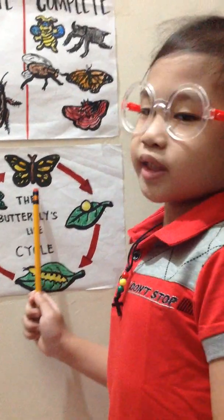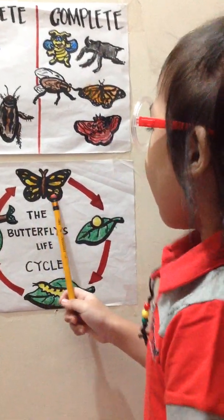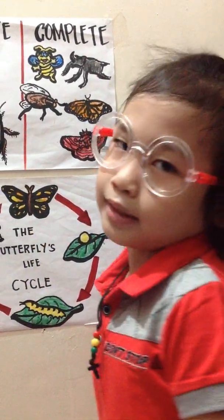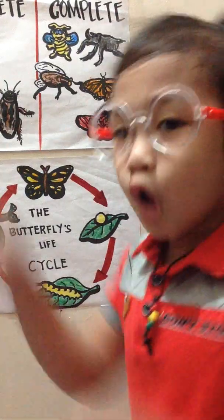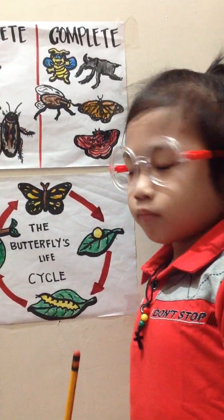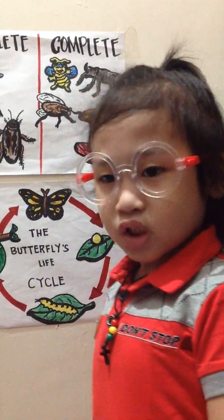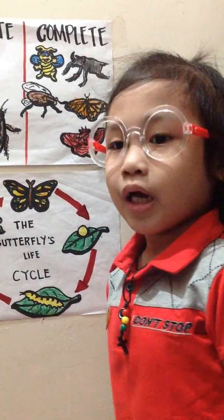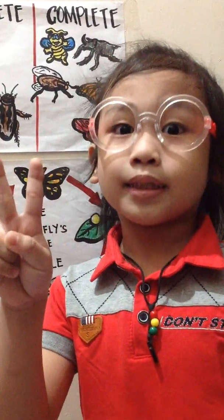Let's talk about the fourth stage: the adult butterfly. The job of the adult butterfly is to make eggs. They now have long legs, long antennae, and compound eyes, compared to the caterpillar. They can now fly using their large and colorful wings. Most adult butterflies live one or two weeks.